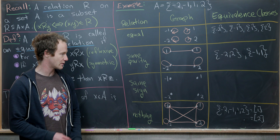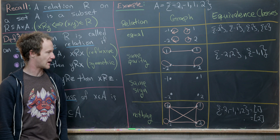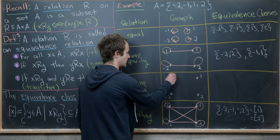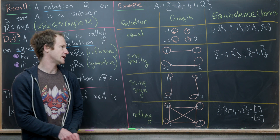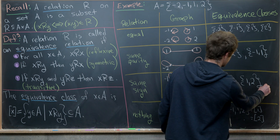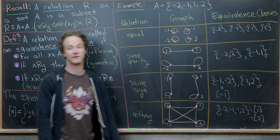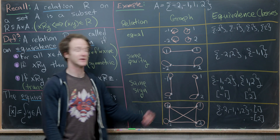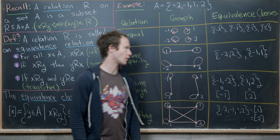Now let's look at the same-sign equivalence relation. Negative one and negative two have the same sign, and one and two have the same sign — both negative or both positive, respectively. The picture is essentially the same as parity, just rotated: a loop on each element and an edge between those of the same sign. The equivalence classes are {negative one, negative two} and {one, two}. We can take negative one as a representative for the first class and two for the second, though we could also have chosen negative two or one.